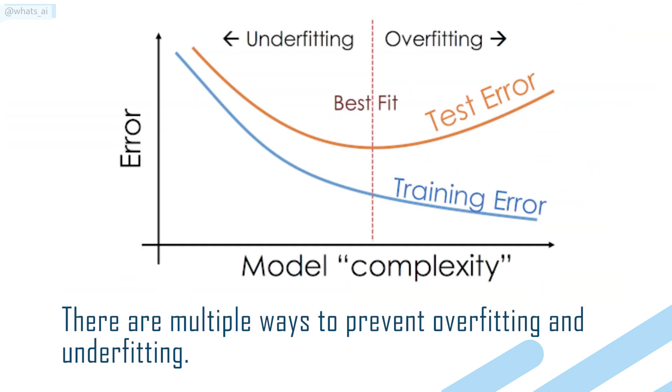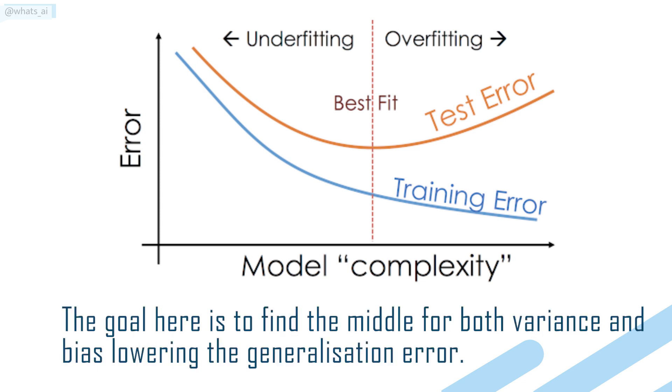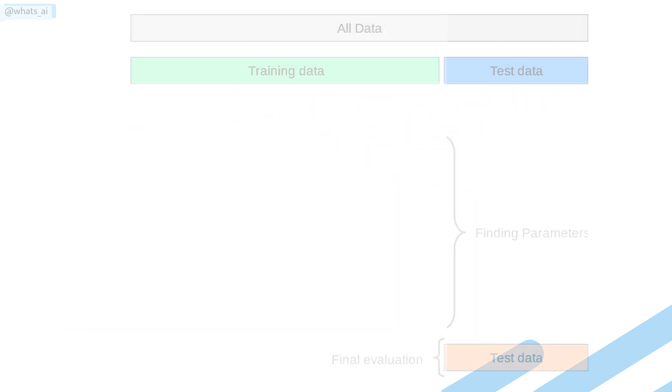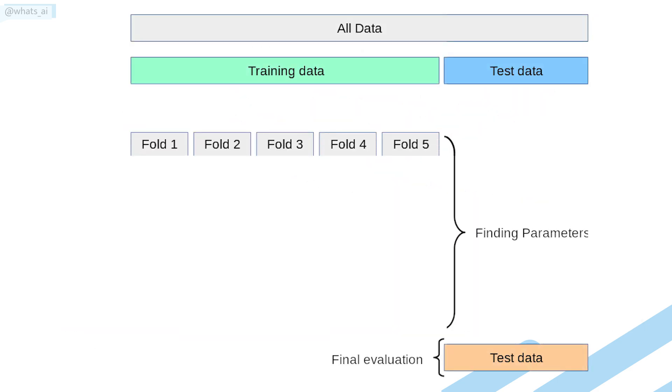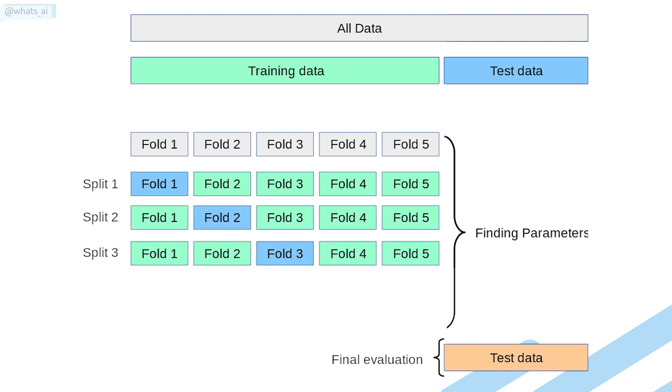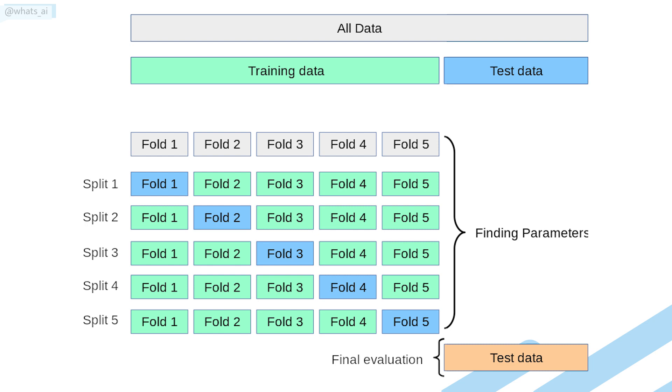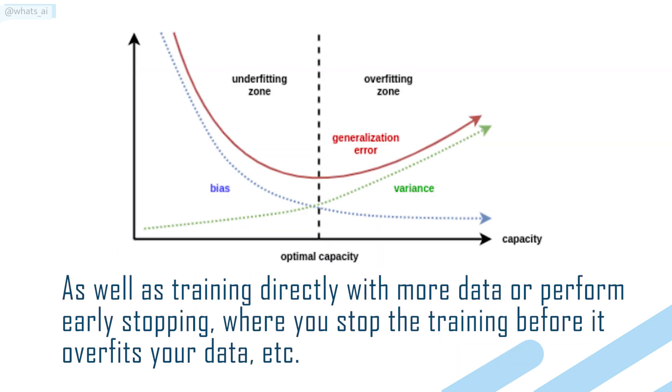There are multiple ways to prevent overfitting and underfitting. The goal here is to find the middle for both variance and bias lowering the generalization error. Using cross-validation is a great way to prevent overfitting, where you use your initial training data to generate multiple mini train and test splits to tune your model, as well as training directly with more data or perform early stopping, where you stop the training before it overfits your data.